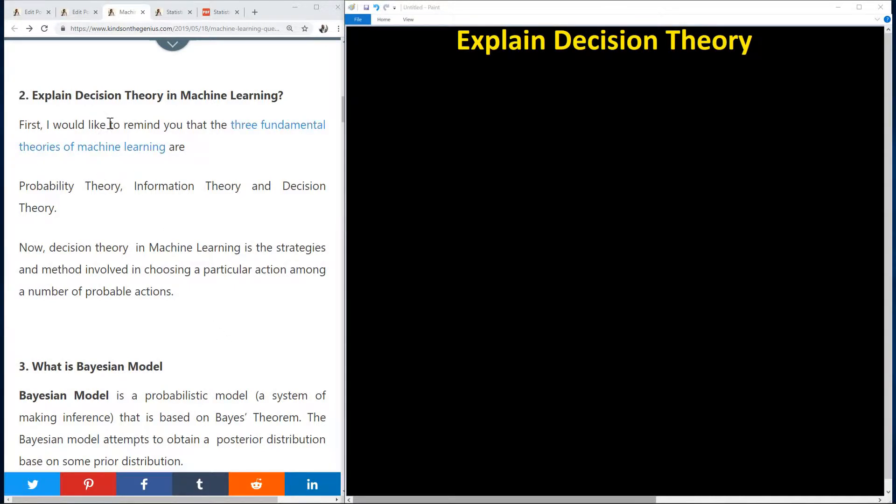Decision theory in machine learning is one of the three fundamental theories of machine learning that I've discussed. The first one is probability theory, information theory, and then decision theory.